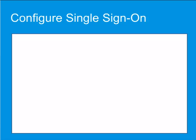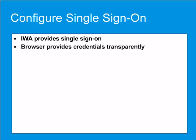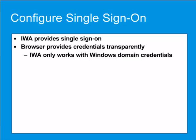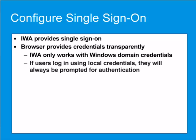One of the main benefits of IWA is that it can provide a single sign-on experience for users because it uses the workstation login to authenticate them. When configured properly, the browser will provide credentials to the ProxySG transparently when challenged for NTLM or Kerberos credentials. However, the user will always be prompted for basic authentication credentials. IWA only works with Windows domain credentials — if users log in with local credentials instead of domain credentials, they will always be prompted whenever the ProxySG returns an authentication challenge.